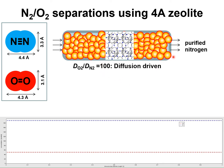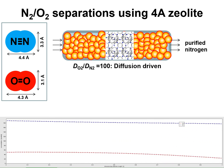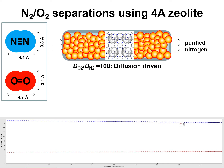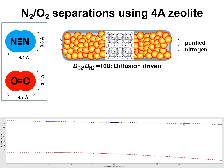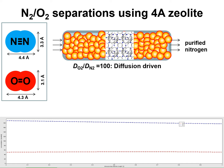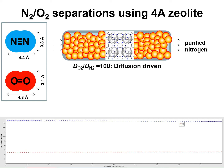Due to the large diffusion selectivity that favors oxygen, the separation of nitrogen-oxygen mixtures is driven by diffusion, which overrides mixture adsorption equilibrium. This technique of exploiting diffusion selectivity is termed kinetic separation, and it is the method adopted in practice to produce purified nitrogen. In the transient breakthrough simulations, nitrogen breaks through first — this technique is used to produce purified nitrogen for blanketing purposes and preservation of edible materials.